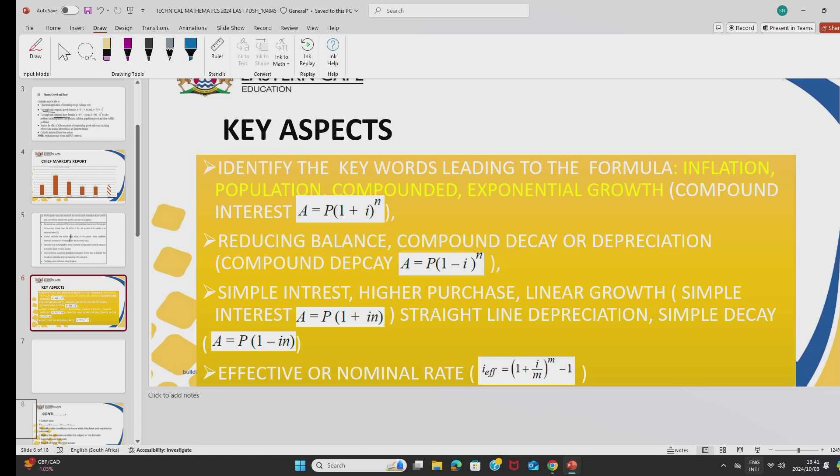And you need to understand what each term leads to which formula. The term inflation, or you see population, compounded, or exponential growth, it tells you that you need to use a compound interest formula. If the statement says simple interest, or you see anything with a word hire purchase or a linear growth, that tells you that you need to use a compound decay formula.